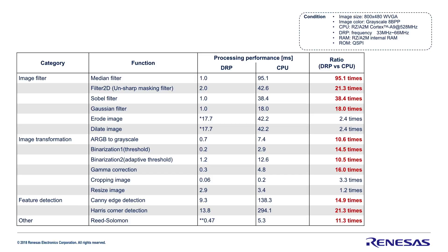And if we look at a list of OpenCV API functions running on the DRP, they can run up to 95 times faster on the DRP compared to software running on the CPU. At the same time, the DRP consumes only roughly 5% of the energy the CPU would require for the same job, which makes the DRP very usable for battery-based applications as well.